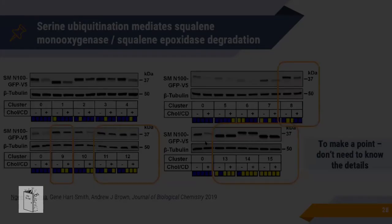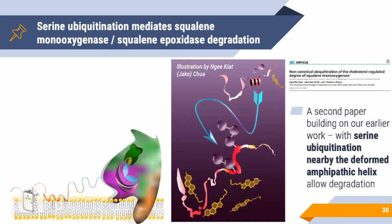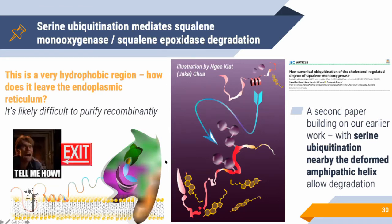Using mass spectrometry and other analyses, we narrowed it down to four key residues — positions 59, 61, 83, and 87 — as top ubiquitination sites. Mass spectrometry confirmed that residue 83 is modified. This refined our model: under high cholesterol, the helix unfolds, exposing nearby serine residues at these positions, which get ubiquitinated, triggering degradation.